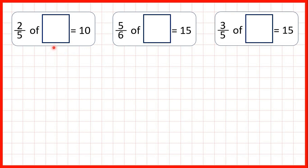Here we've got some missing number problems for finding a fraction of a number. Normally, to find a fraction of a number we divide by the denominator and multiply by the numerator. But here, because we know our answer but don't know the total quantity, we've got a missing number problem, so we need to do the opposite — use the inverse. We need to divide by the numerator and then multiply by the denominator.